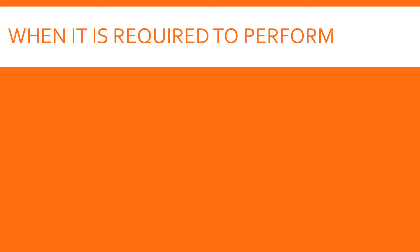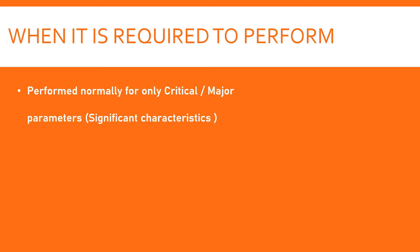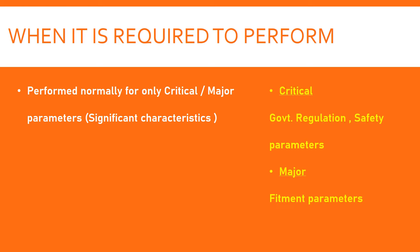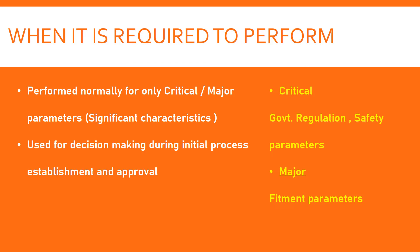When is it required to perform process capability? Normally it is followed for critical measurement parameters — significant characteristics. Critical means parameters which affect government regulations or CTF functions in the field. Major means it affects fitment parameters at the customer end during assembly, final assembly, or sub-assemblies. For these critical and major parameters, normally we perform process capability.